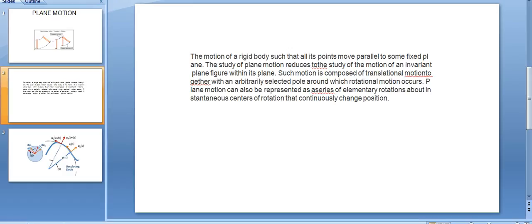Such motion is composed of translational motion together with an arbitrarily selected pole around which rotational motion occurs. Plane motion can also be represented as a series of elementary rotations about instantaneous centers of rotation that continuously change position.